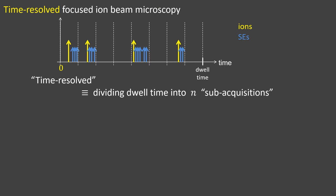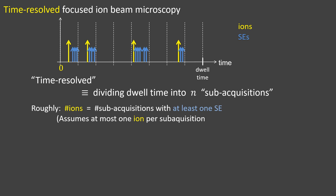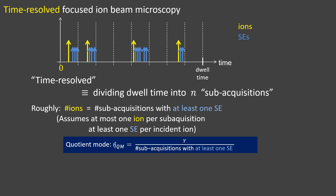What we mean by time-resolved measurements is to divide our total dwell time into several subacquisitions. When the subacquisitions are short enough, we can say roughly that the number of incident ions is the number of subacquisitions with at least one secondary electron. This is based on assuming at most one ion per subacquisition and at least one secondary electron per incident ion. It gives us an estimator for eta called QM.